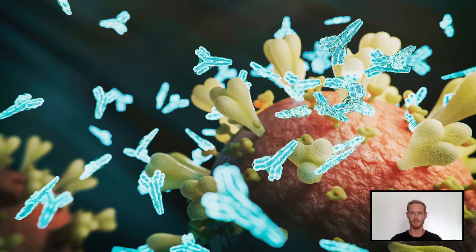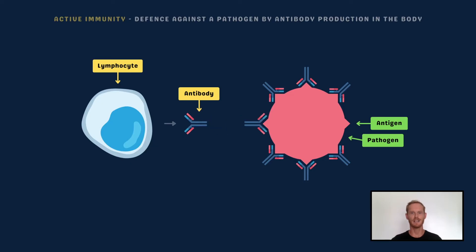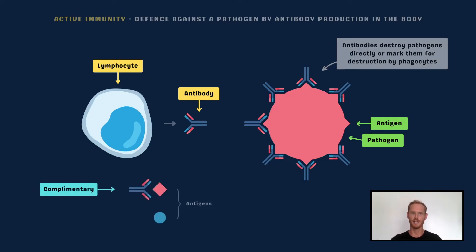That's everything for core, so we'll move on now to the extended content, beginning with the term active immunity. Active immunity can be defined as the defence against a pathogen by antibody production in the body. Antibodies produced by lymphocytes bind to antigens that line the surfaces of pathogens. This either destroys the pathogens directly, or marks them, making it easier for phagocytes to locate and ingest them. Antigens and antibodies have specific complementary shapes, meaning a particular antibody only binds to one kind of pathogen.